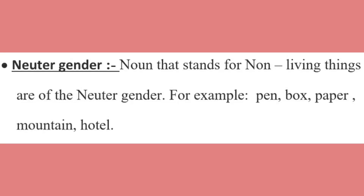Now fourth is neuter gender. Nouns that stand for non-living things are neuter gender. For example: pen, box, paper, mountain, hotel. The things which are non-living are represented as neuter gender. For example: furniture, books, pencils — these are non-living things, so these all are neuter gender.